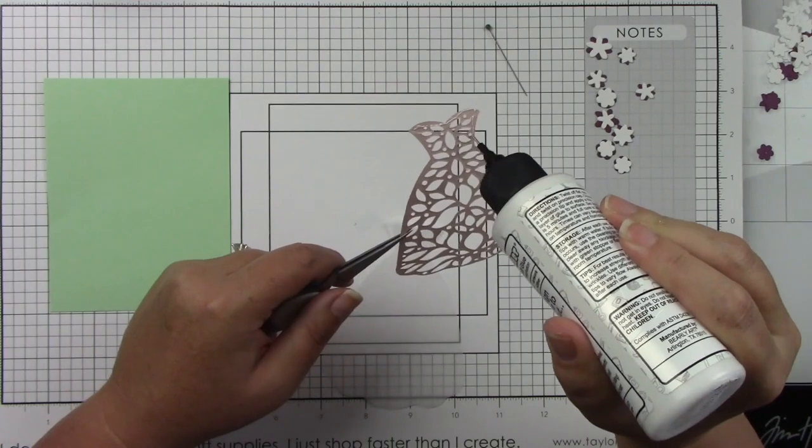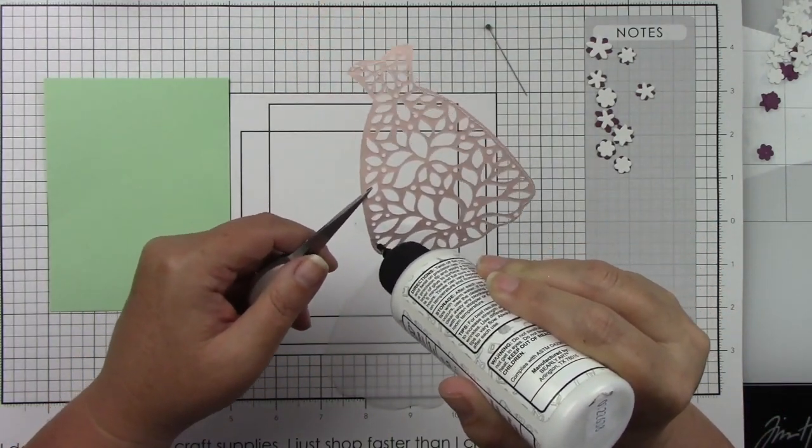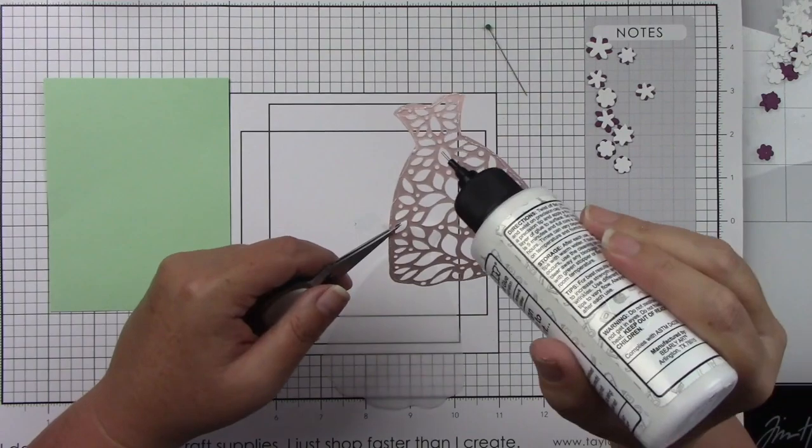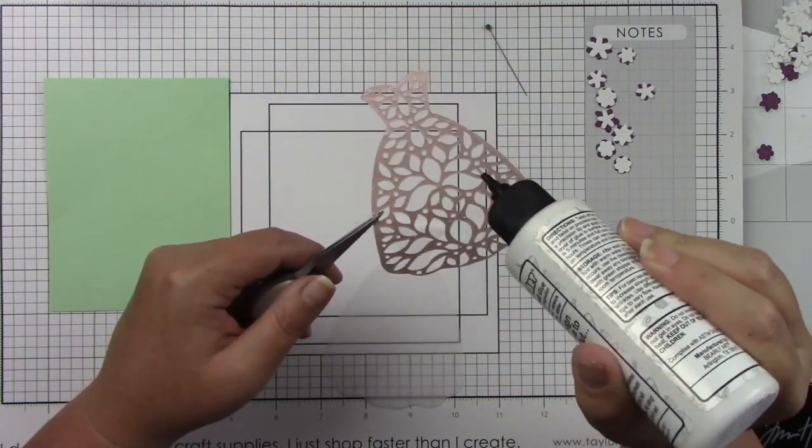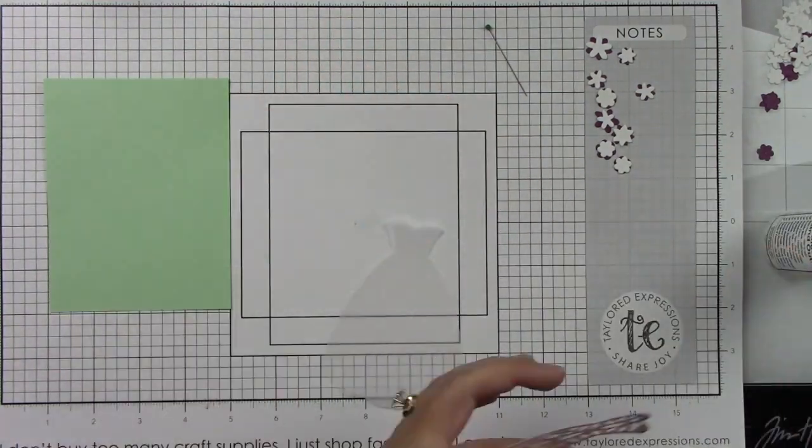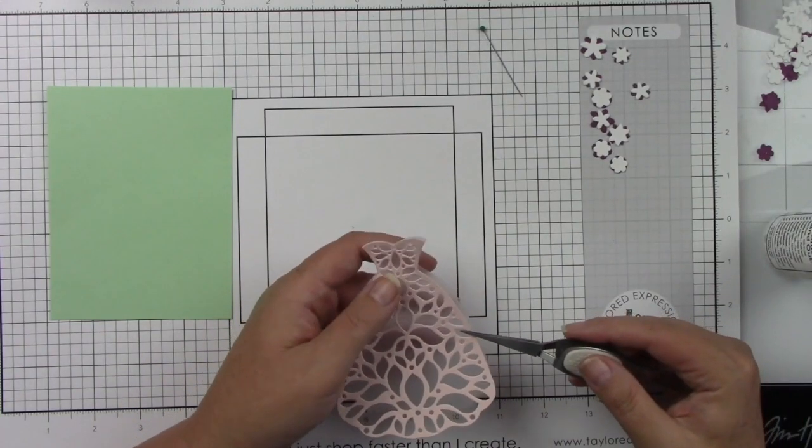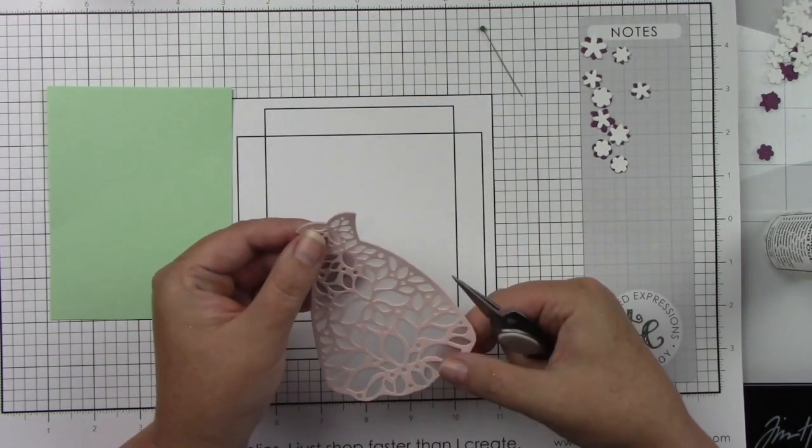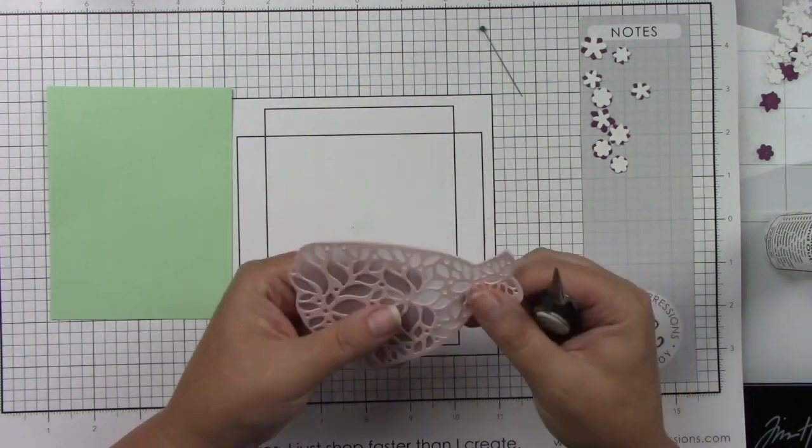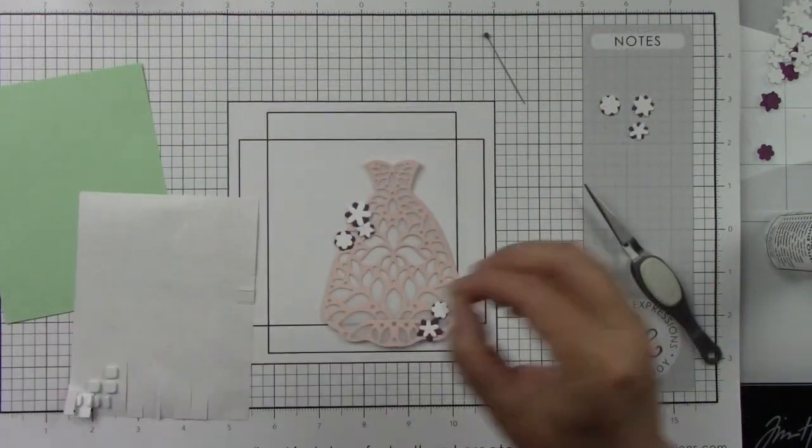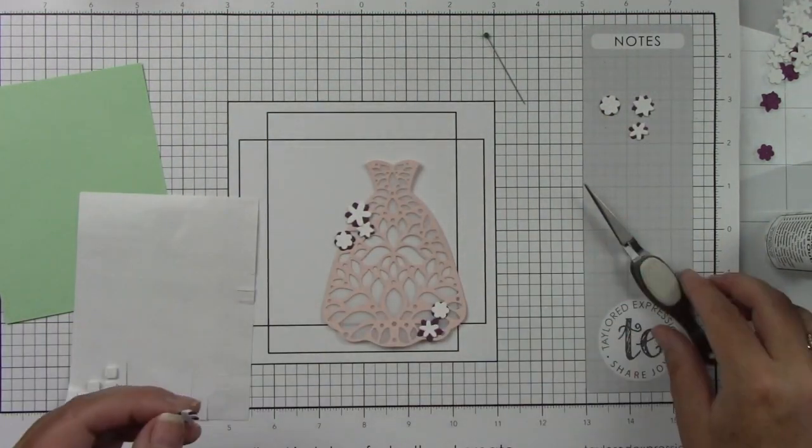Let's adhere this beautiful Rose Water die cut dress to the vellum. So I'm just using the tiniest bit of liquid glue because I don't want it to smear on the background, and then I can just adhere that right into place. And now we've got this beautiful vellum dress.